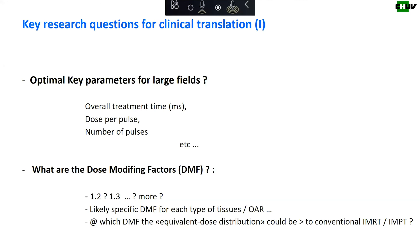If we integrate a flash dose-modifying factor into our treatment planning, at which level of dose-modifying factor will we see an equivalent dose distribution that could be superior to conventional IMRT or IMPT? We don't know at the moment. This is absolutely key, because we need to be better in order to have a real added value from flash.